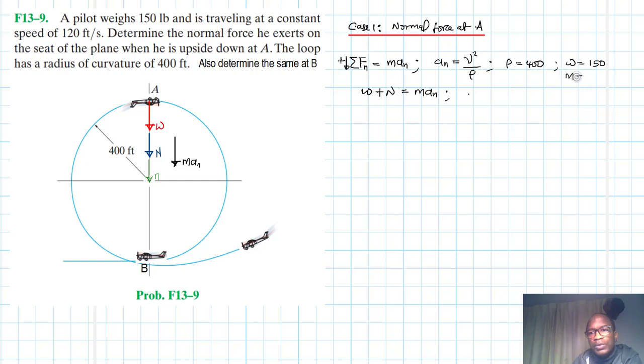Let's write down the equations. We have W plus N equal to m*a_n. Therefore W is equal to 150, and our m is equal to 150 divided by the acceleration due to gravity which is 32.2. This therefore becomes equal to 150.